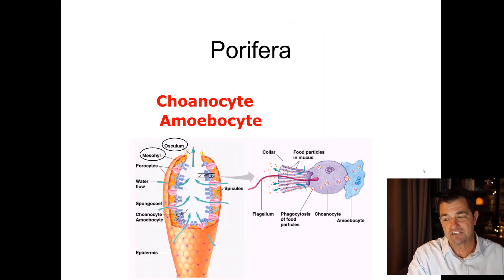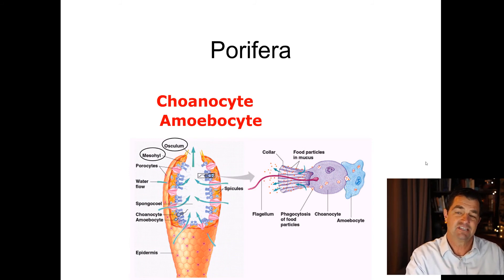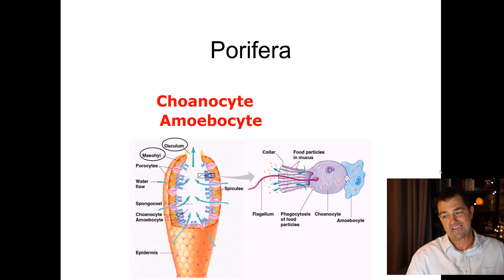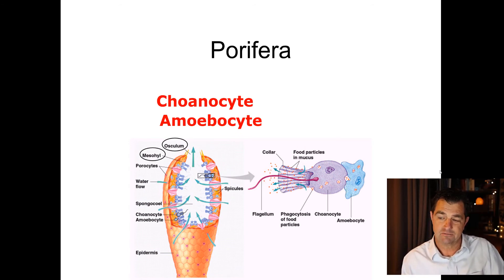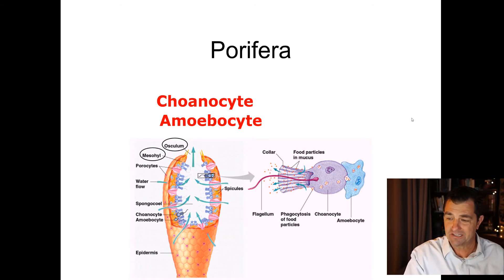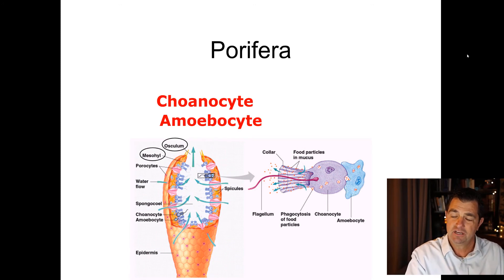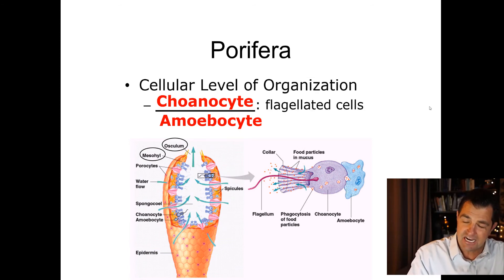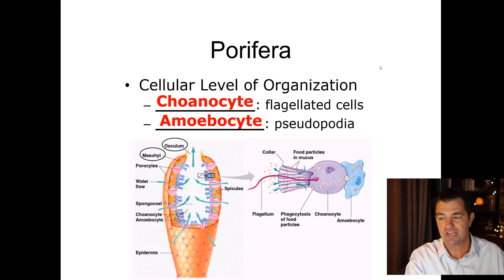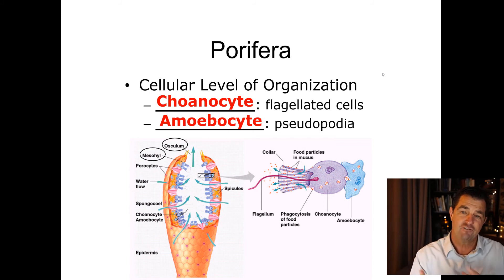Sponges have a cellular level of organization with a couple of important cell types. The most important for feeding is the choanocyte, which has a collared structure and a central flagellum. The choanocytes beat their flagella to create water currents that move particles in and around the sponge. Amoebocytes, found inside the sponge, use pseudopods to engulf and digest the food particles brought in by the choanocytes.